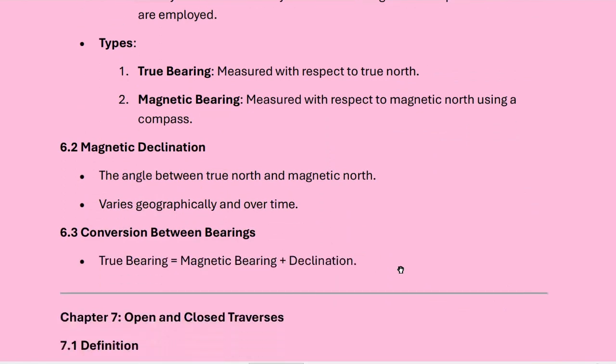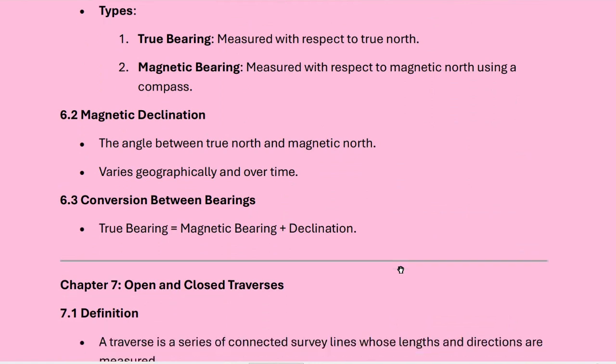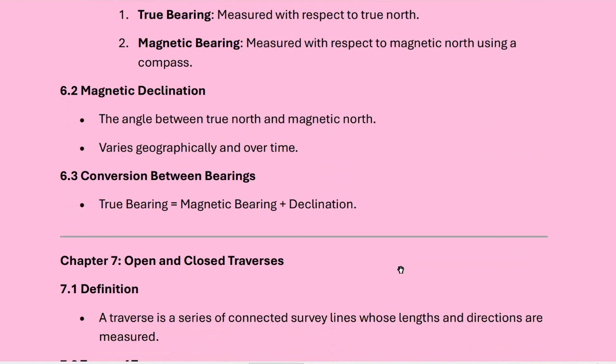We have already discussed magnetic declination — the angle between true north and magnetic north, which varies geographically and over time. The general conversion formula is: true bearing = magnetic bearing + declination, where the sign (plus or minus) depends on whether the declination is east or west.